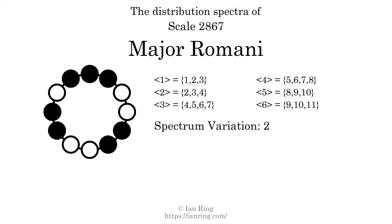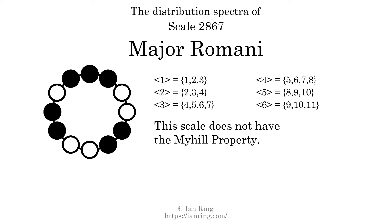The spectrum variation is the sum of all the widths, divided by the number of tones. The spectrum variation of this scale is 2. Since the variation is greater than 0, this indicates that the scale is not perfectly even. The highest spectrum width is 3, and since this is greater than 1, we know that this scale is not maximally even. If every spectrum has exactly 2 specific intervals, we call that the Myhill property. This scale does not have the Myhill property.